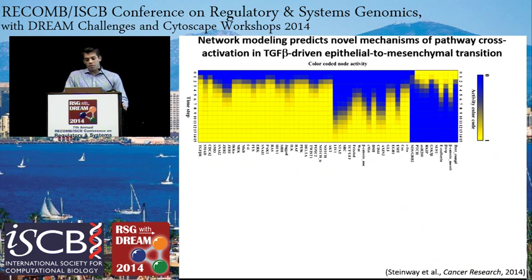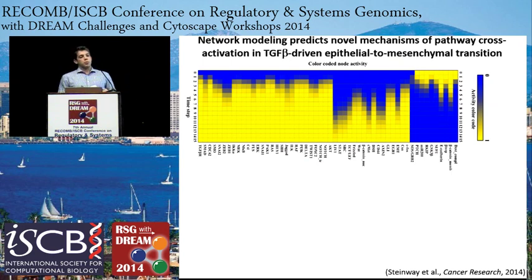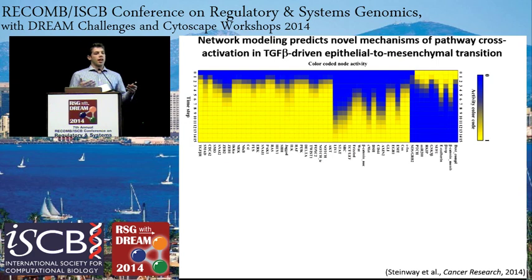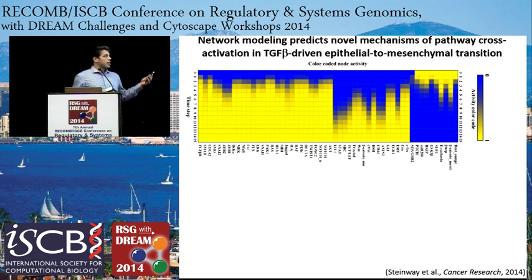We constructed rules as best we could based on known logic and outcomes we expected to see in these signaling pathways. When we did simulations by turning on TGF-beta and looking at the downstream effect on other nodes in our network, when the rules produced effects we didn't expect based on what's known about EMT, we went back, looked at the rules and logic, and adjusted them to recapitulate what's known about EMT signaling. We did this iterative process until we came up with something that qualitatively represented what's known about EMT signaling.